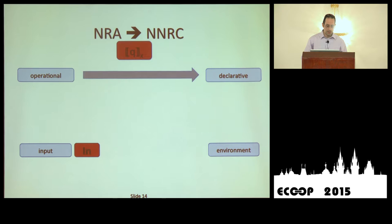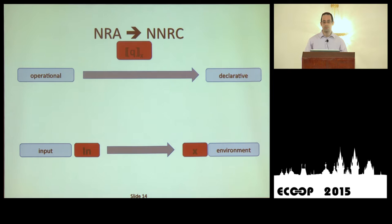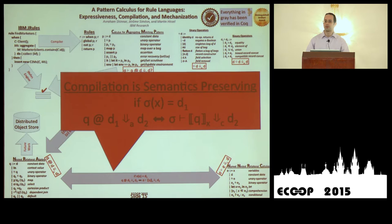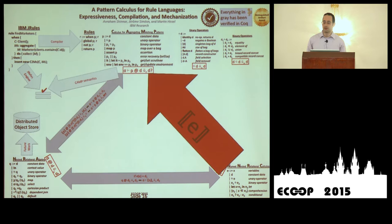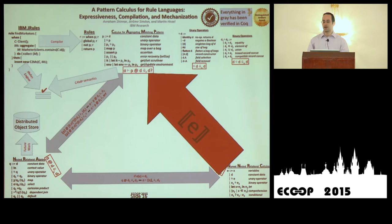We have that compiler and prove it semantics-preserving. Then we compile from NNRC back to CAMP. One reason for the detour through NNRC is that it's a good intermediate for the compiler: most of the work is mapping various constructs into the single bag comprehension, and then we just need to model that bag comprehension in CAMP. In this compilation, we don't use all the features of CAMP — the input environment given an x just converts to env.x put in the target environment, and the result of our compiler completely ignores its input.